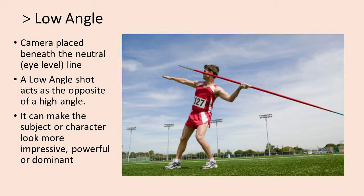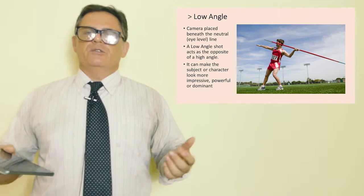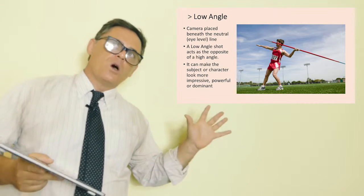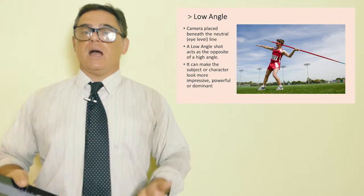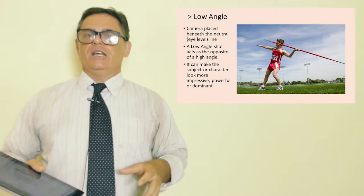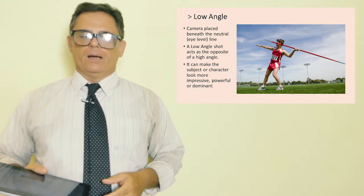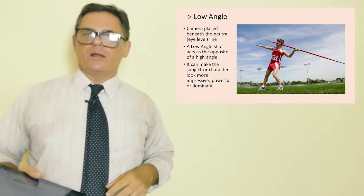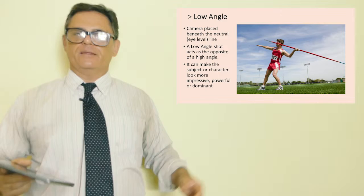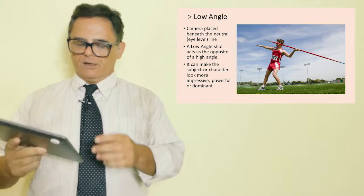Similarly, the opposite is the low angle shot where the camera is placed below the line of action and below the neutral line. Here, the low angle shot acts as the opposite. It makes the character, it can make the character look more powerful, more dominant, more impressive. Maybe the hero at the end of a scene could be shown with a low angle as the hero, if you want to make the hero appear to be powerful. On the other hand, if it's the director's choice to make the hero be an anti-hero, that is, a hero with human frailties and doubts and weaknesses, then that might be a high angle shot looking down on the hero. This example you see here is low angle looking at the athlete, showing the power, the dominance of the athlete.